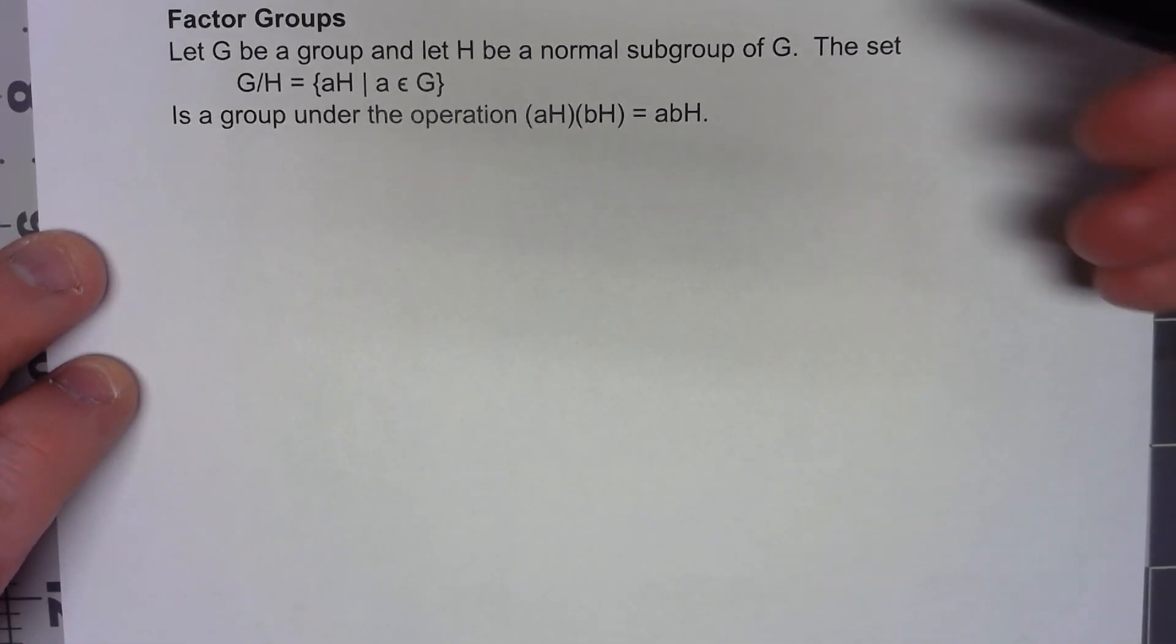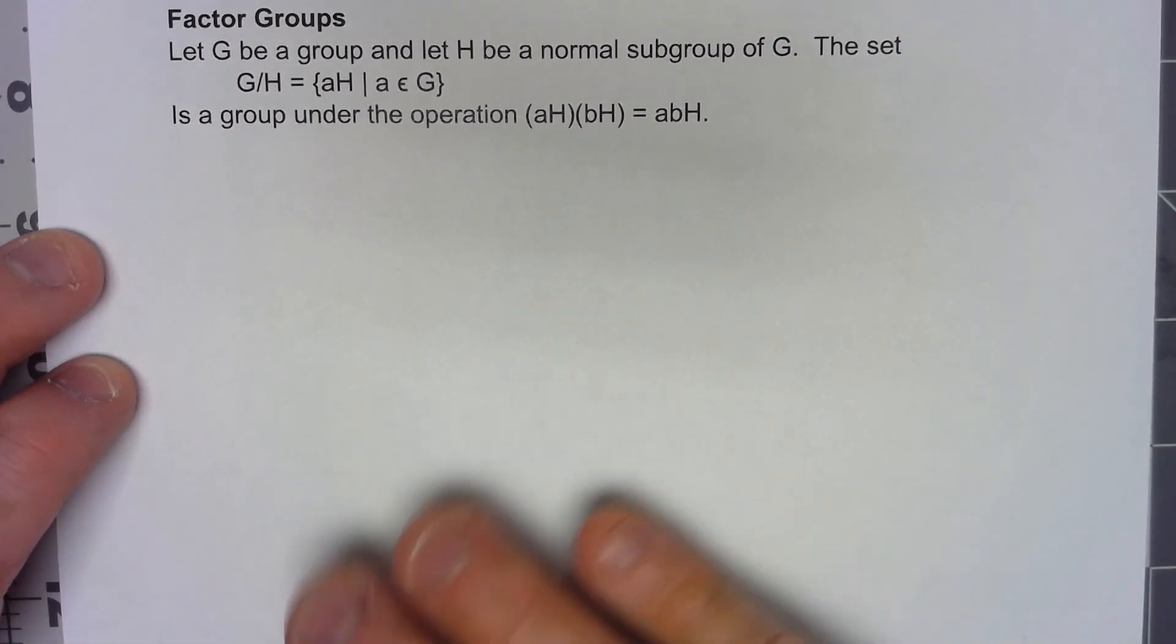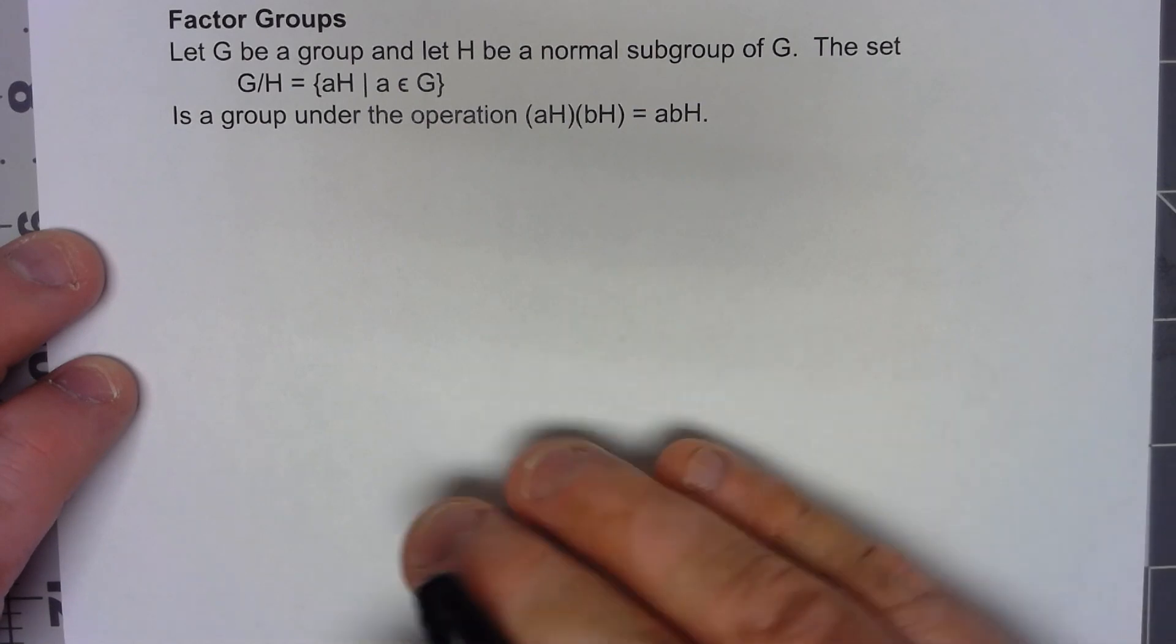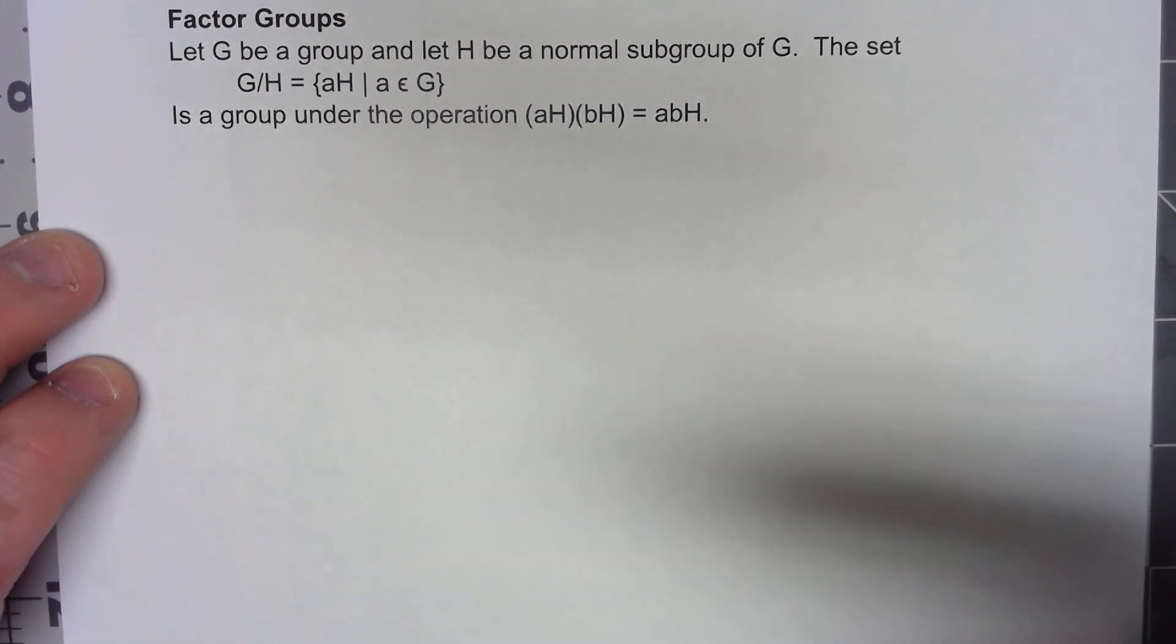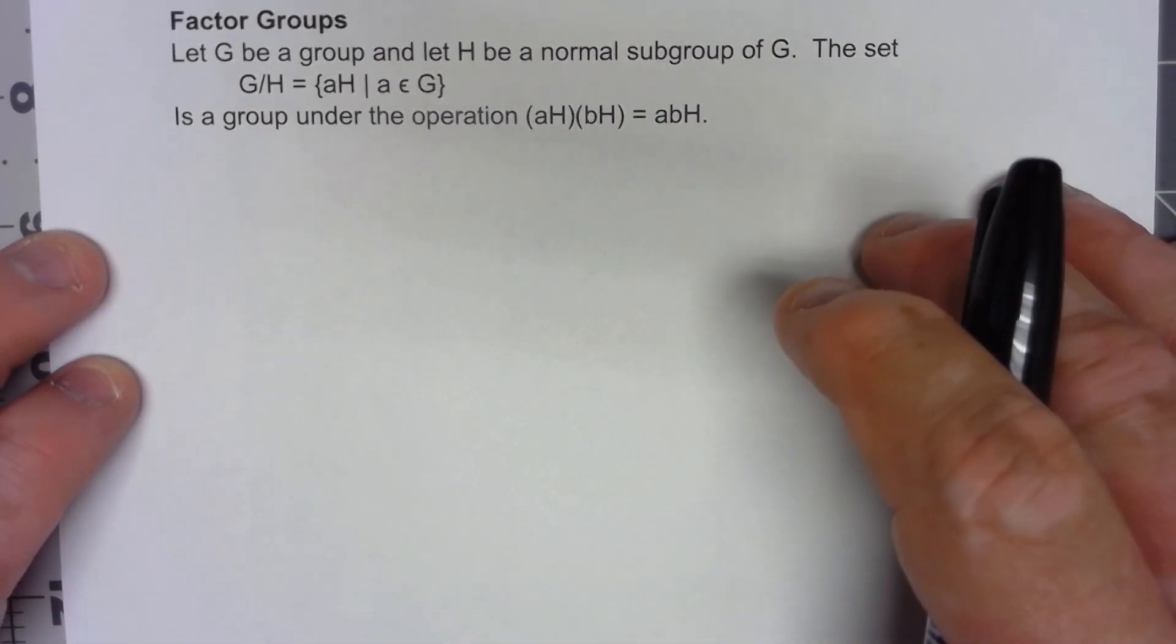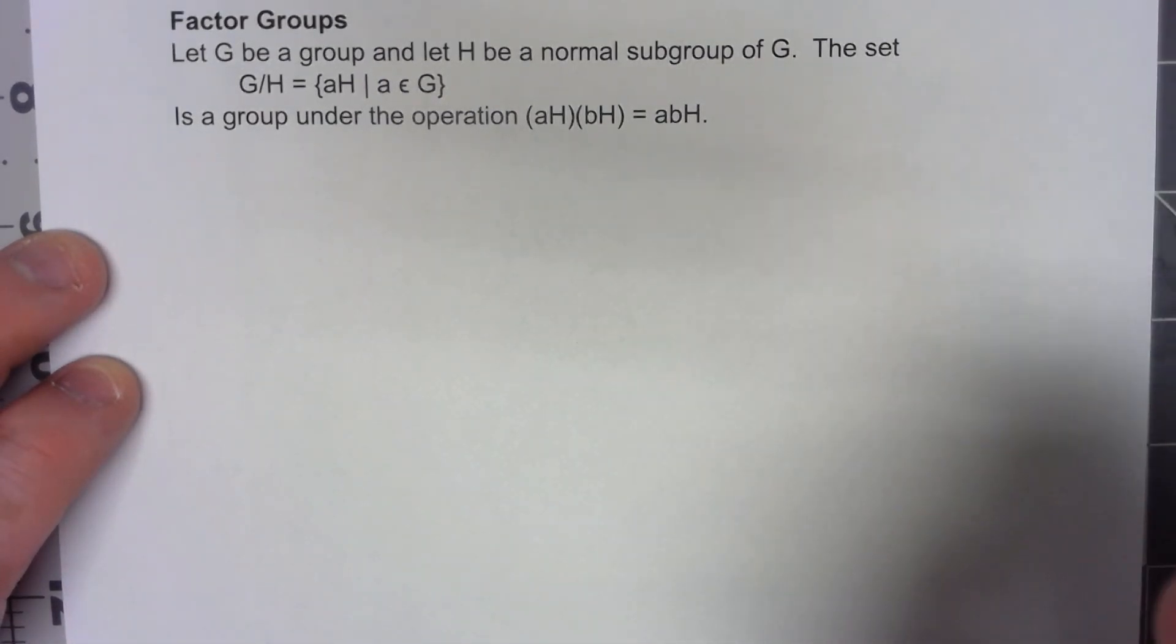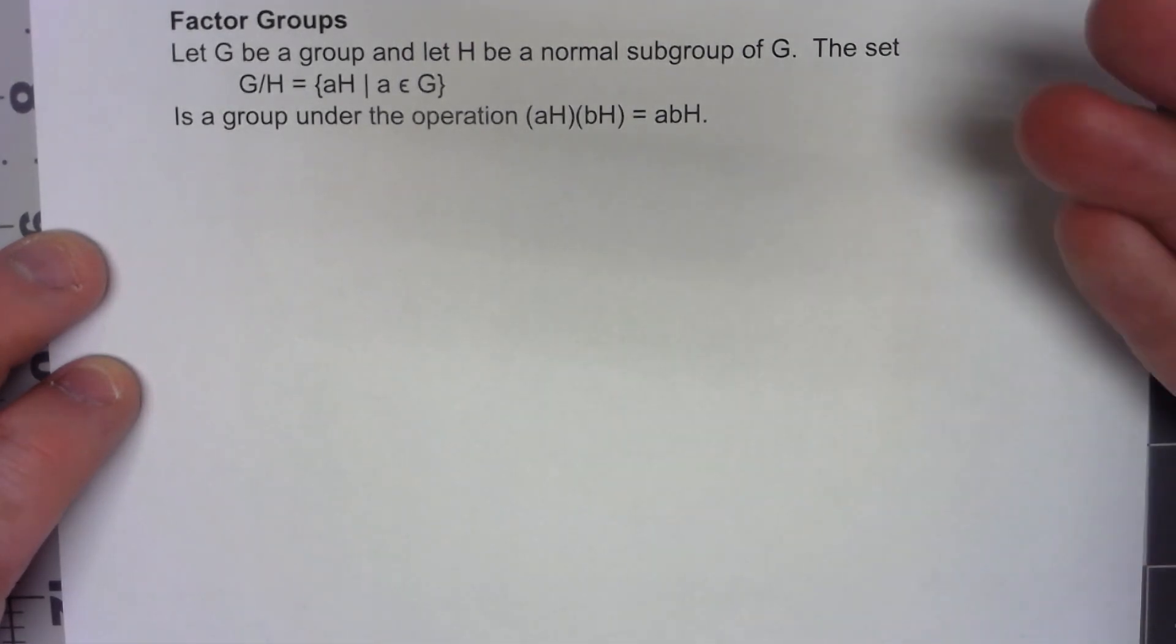We've looked at what a normal subgroup is and how to test for normality, but we haven't really gotten into why we care. Once again this will make more and more sense as we go on, but this is the basic idea here. If we have a normal subgroup, we can actually construct a new kind of group.